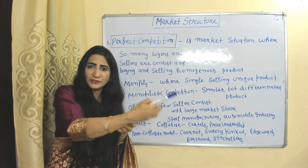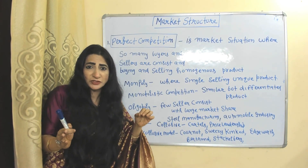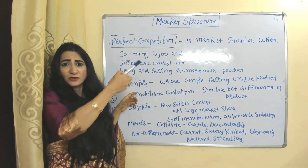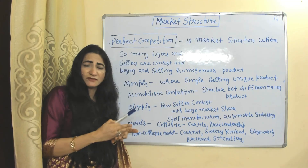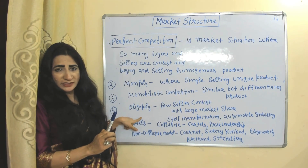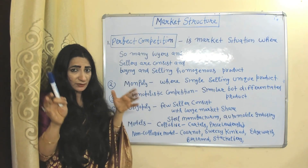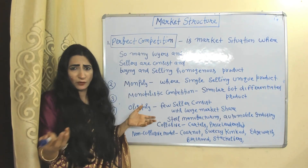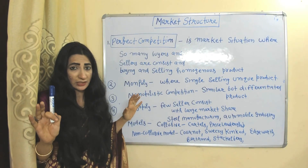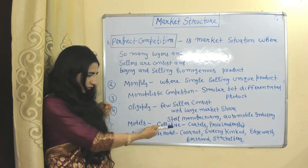Monopolistic competition is where sellers sell similar but differentiated products — the product is the same type but quality and features differ. For example, L'Oreal, Tresemmé, and Clinic Plus all sell shampoo, but quality and features differ. Like perfect competition, monopolistic competition firms can earn super-normal profit, normal profit, or a minimum loss in the short run, but will always earn normal profit in the long run. Oligopoly is a market with few sellers but a large market share; products can be same or differentiated. Oligopoly models are divided into collusive (cartels, price leadership) and non-collusive (Cournot, Edgeworth, Bertrand, Stackelberg).